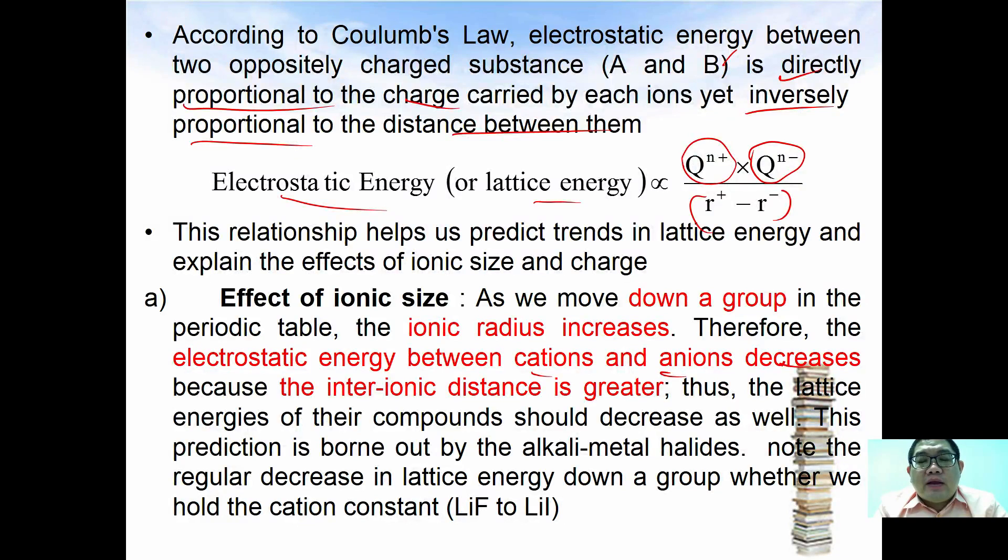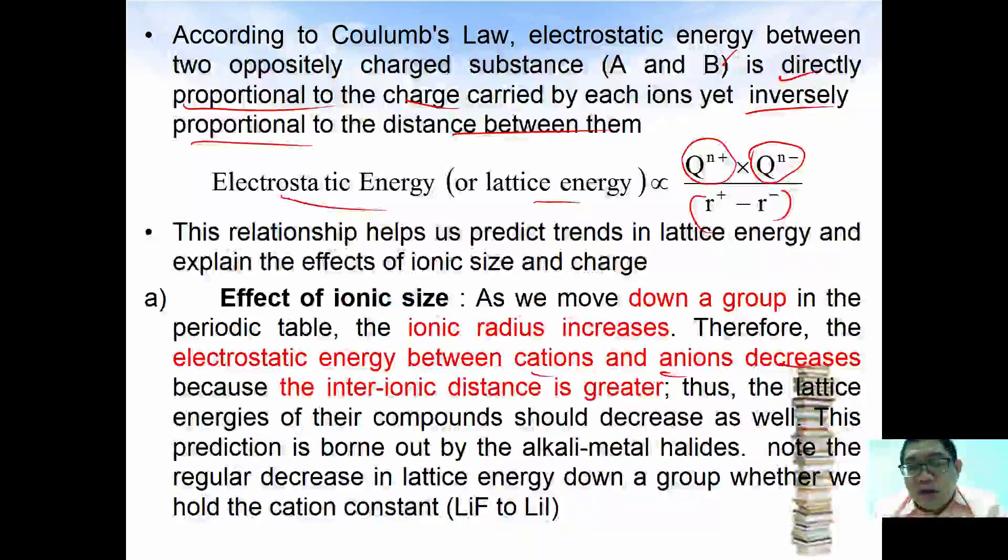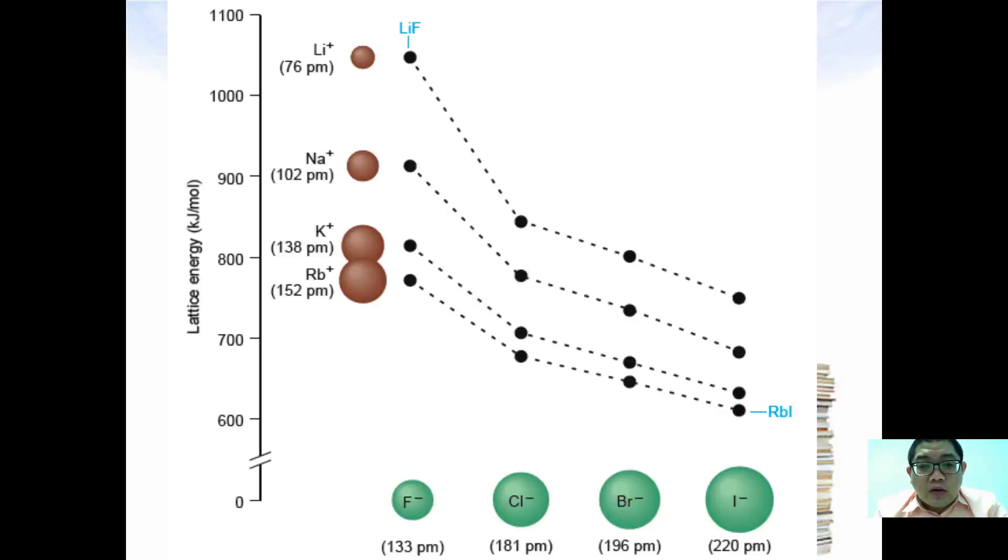Because the interionic distance eventually becomes greater, thus the lattice energy of the compound should decrease as well. This prediction is borne out by the alkali metal halides. Note the variation of the lattice energy when going down the group. This is the table that you can see here where all of them have the same charge; however, with the increase of the cationic size, the lattice energy eventually decreases. Same goes with the anions - all of them have the same charge of negative, but with the increasing of the anionic radius, the lattice energy is also decreasing.